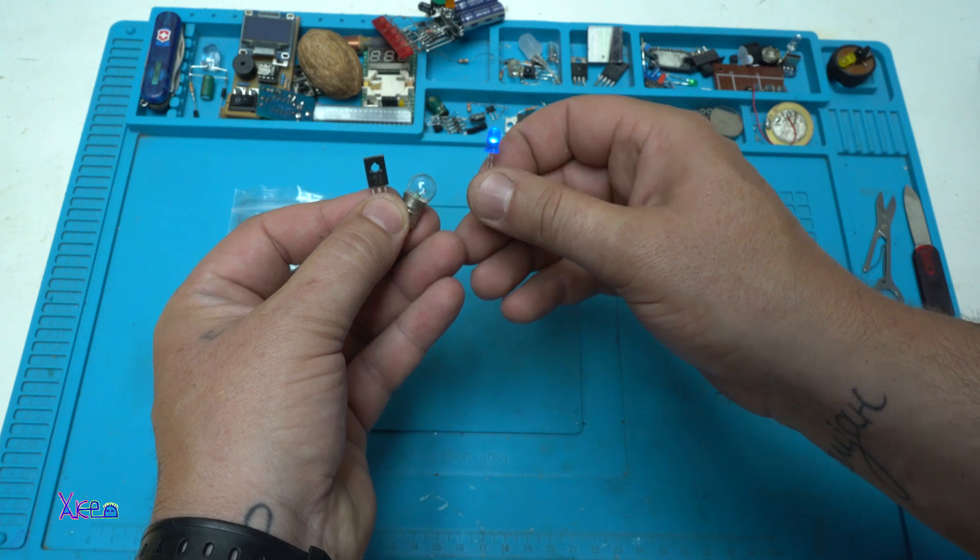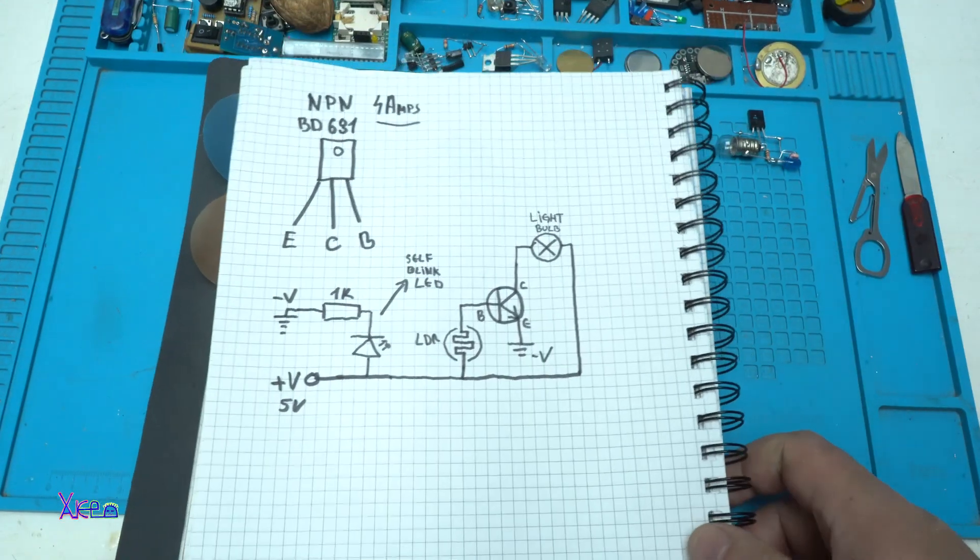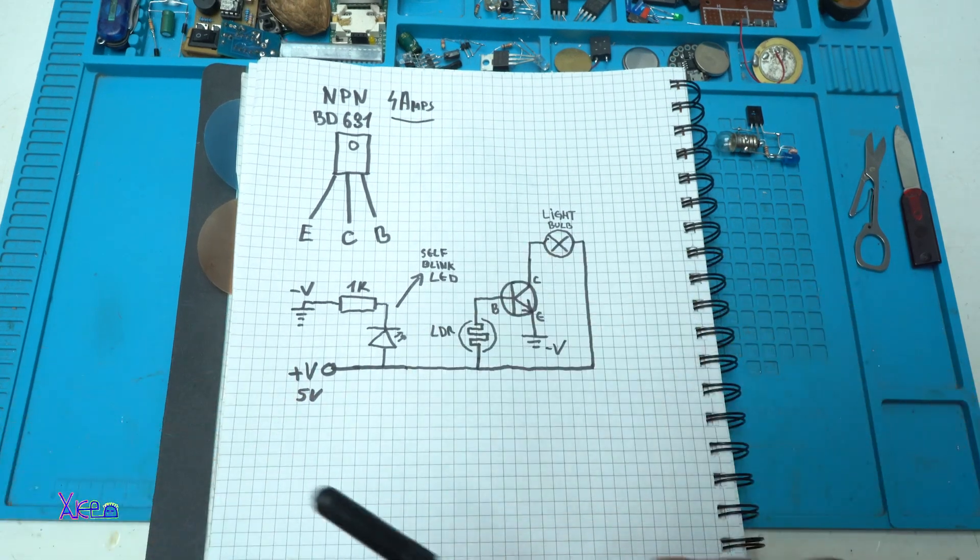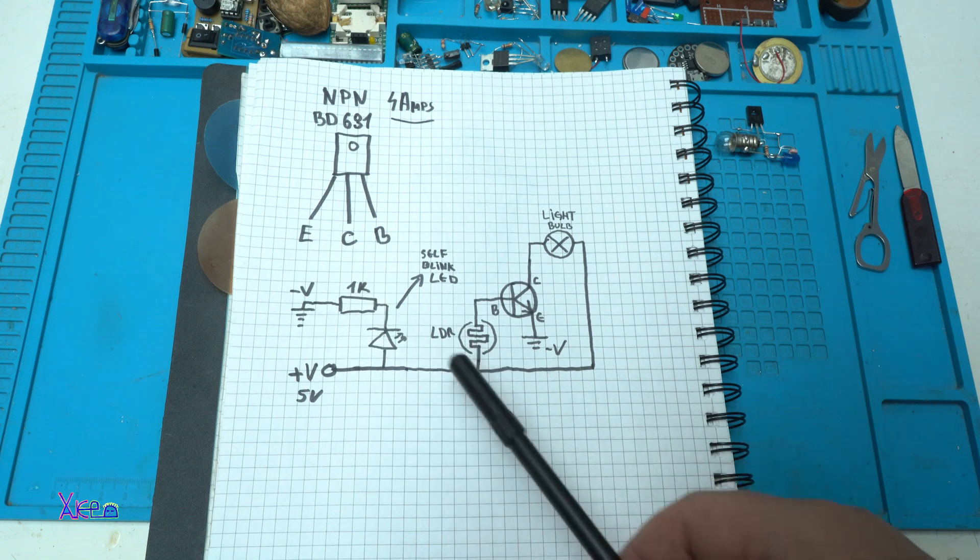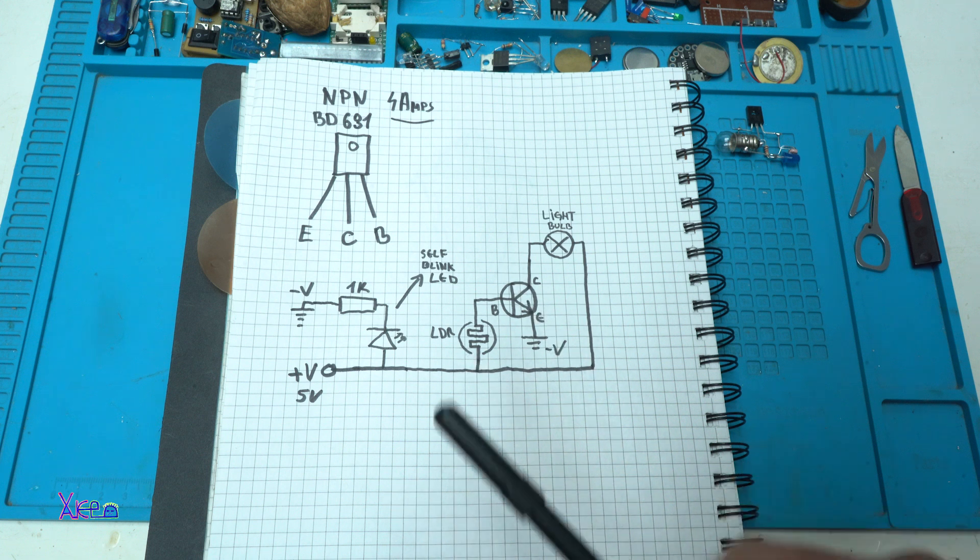Let me explain the circuit now. Here is the circuit diagram. It's very simple you can see. It needs only five electronic components together with the ordinary light bulb to make this circuit.